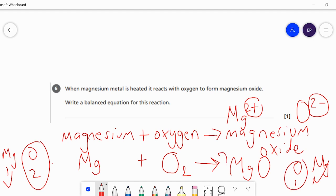If we place a balancing number of 2 in front of the MgO, that means we have 2 oxygens on both sides. Although we have now upset the magnesiums - previously there was 1 magnesium on the left and 1 magnesium on the right, but now we've got 2 magnesiums on the right hand side.